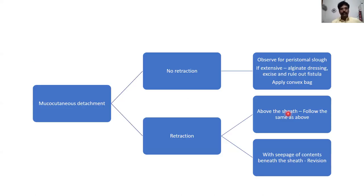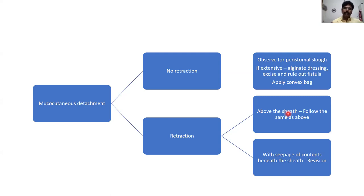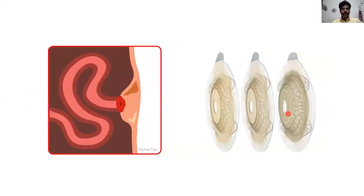Mucocutaneous detachment needs to be assessed for associated retraction. If there is no retraction, probably wait — these are likely to heal with secondary intention. Observe the extent of slough: if minimal, wait; if extensive, consider alginate dressing or careful debridement without injuring the stoma. Sometimes it may be a marker of an underlying fistula opening into the subcutaneous plane. In all these cases, it is best to apply a convex bag. A convex stoma bag opposes the subcutaneous tissue, preventing contamination of the subcutaneous plane with enteric contents. If retraction is present above the fascia, follow the same principle; if below the fascia, the patient may require revision.